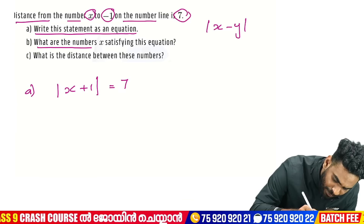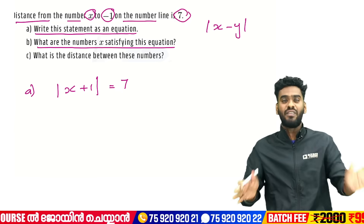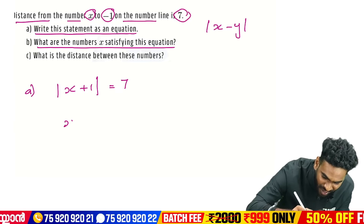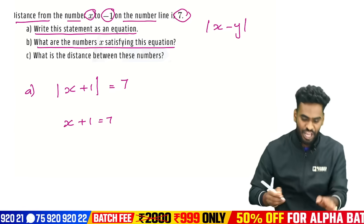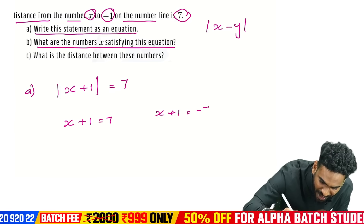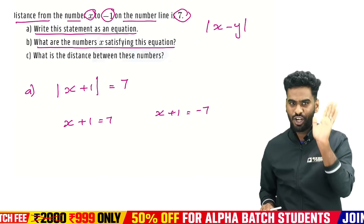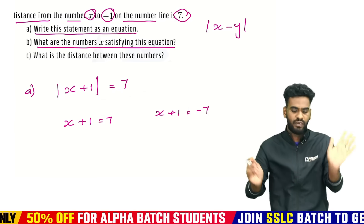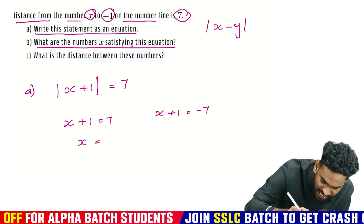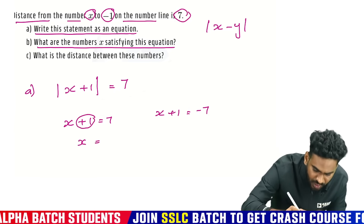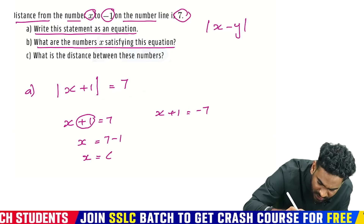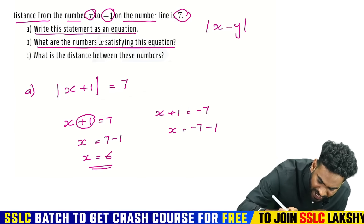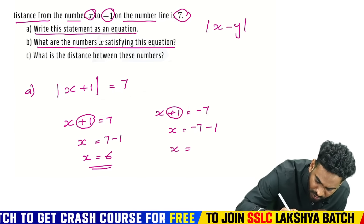What are the numbers X in this equation? Solving mod X plus 1 equals 7: X plus 1 equals 7, so X equals 7 minus 1, X equals 6. Or X plus 1 equals minus 7, so X equals minus 7 minus 1, X equals minus 8.